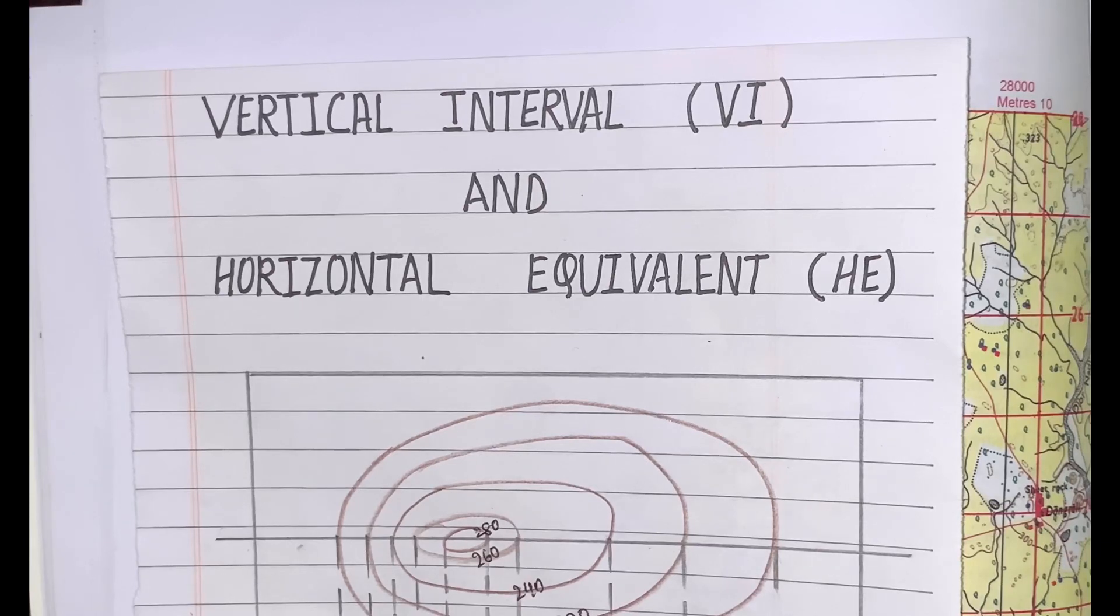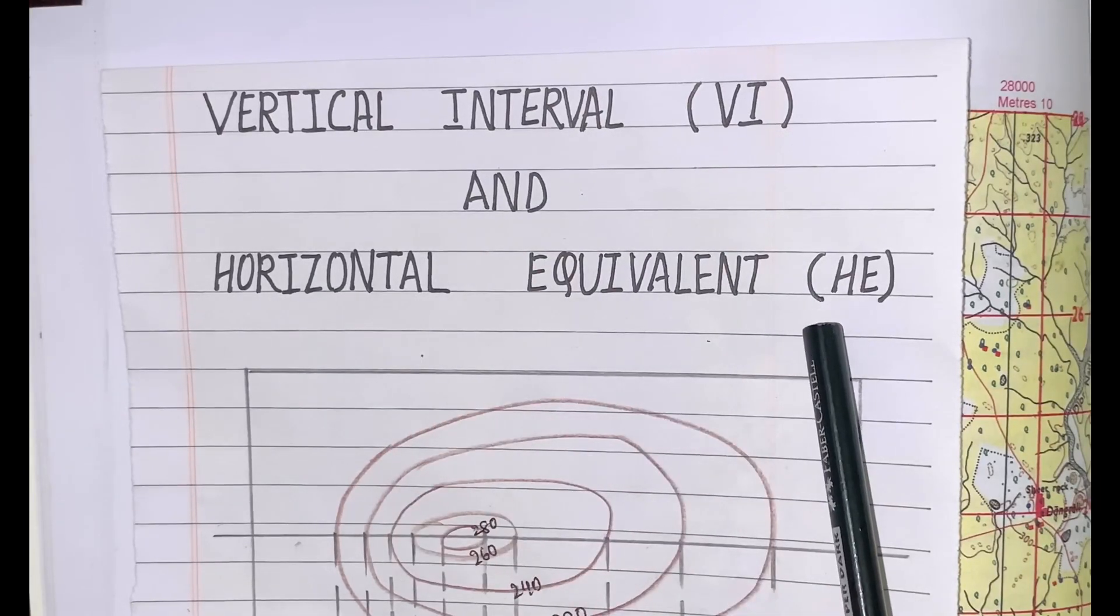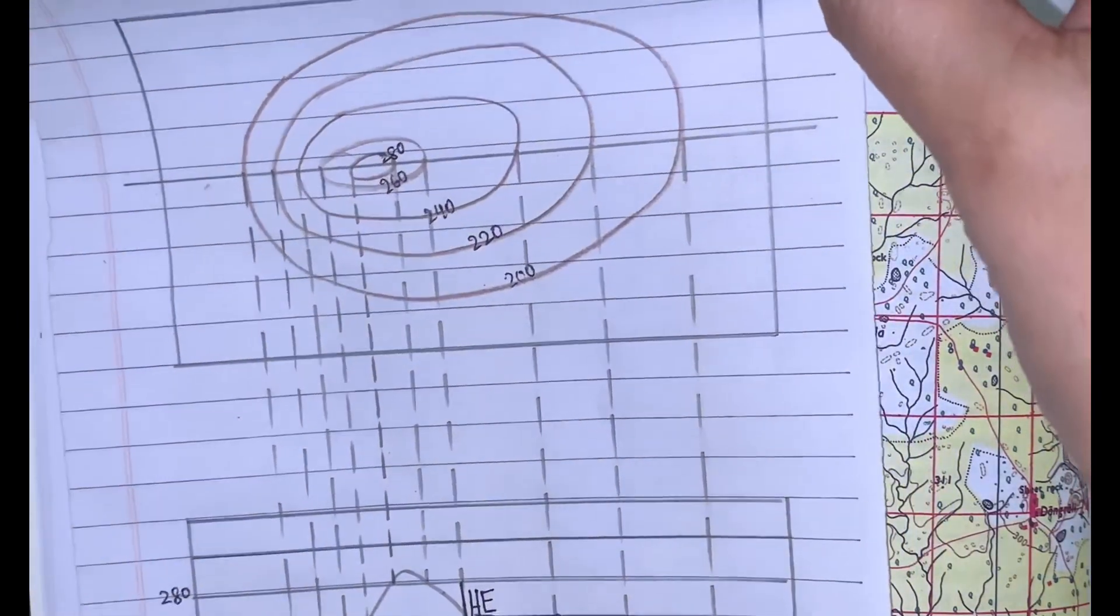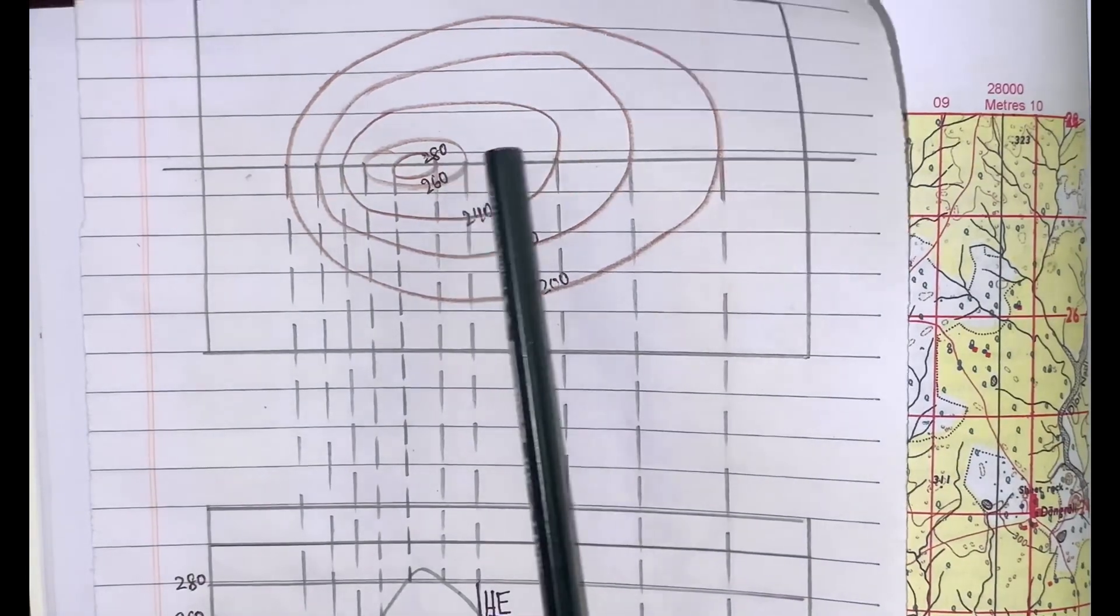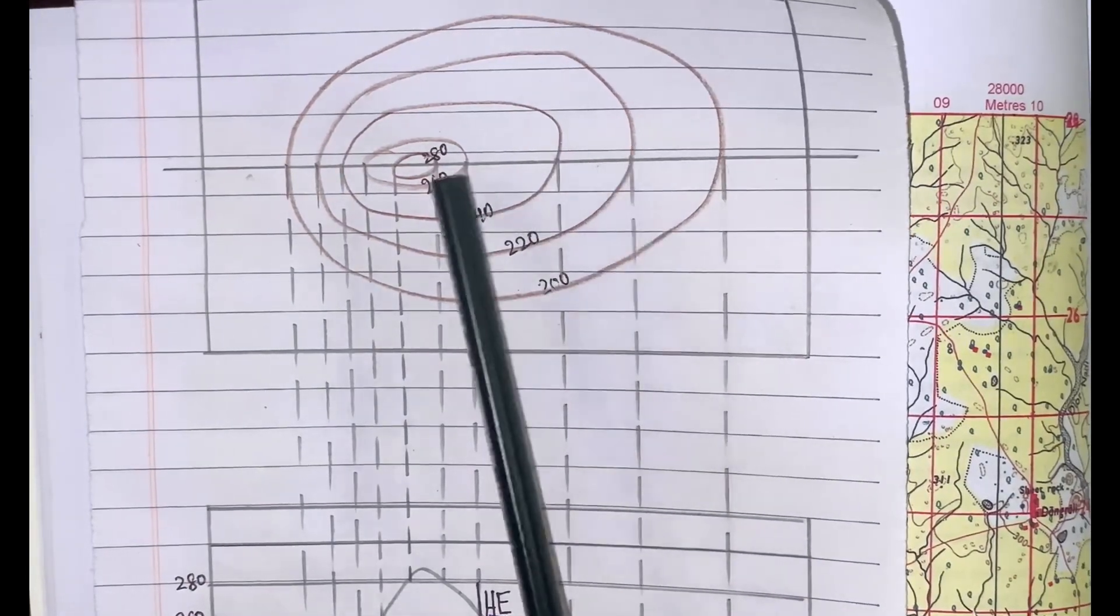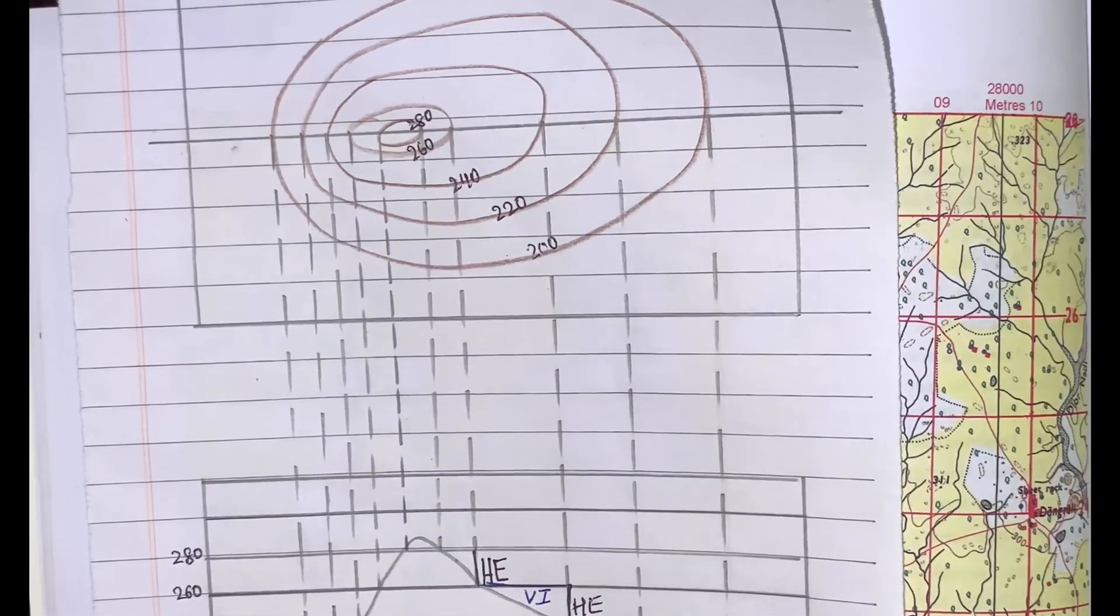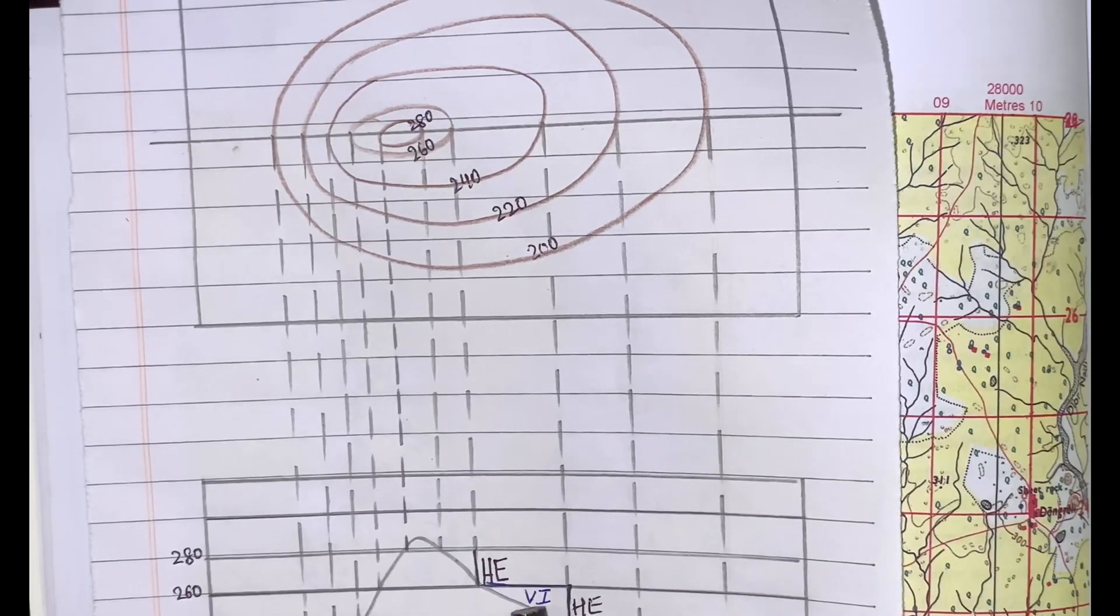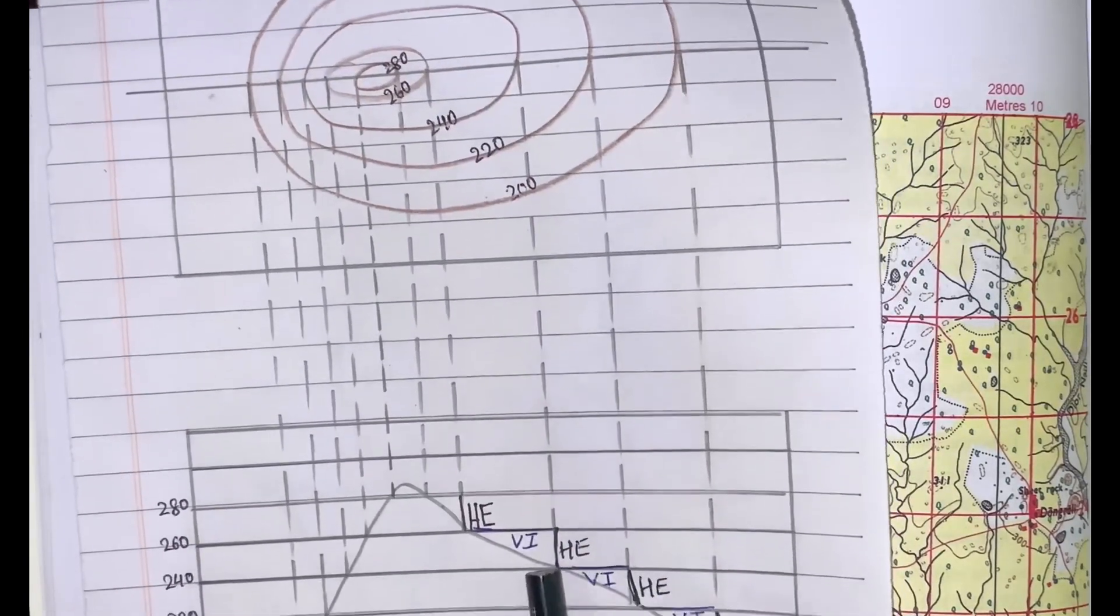Two terms are often used in relation to contours: vertical interval (VI) and horizontal equivalent (HE). With the help of this diagram, I will explain these two terms. The vertical interval is the vertical distance between two consecutive contour lines. Here in the cross section also this is clear. The vertical distance between these two is shown here.